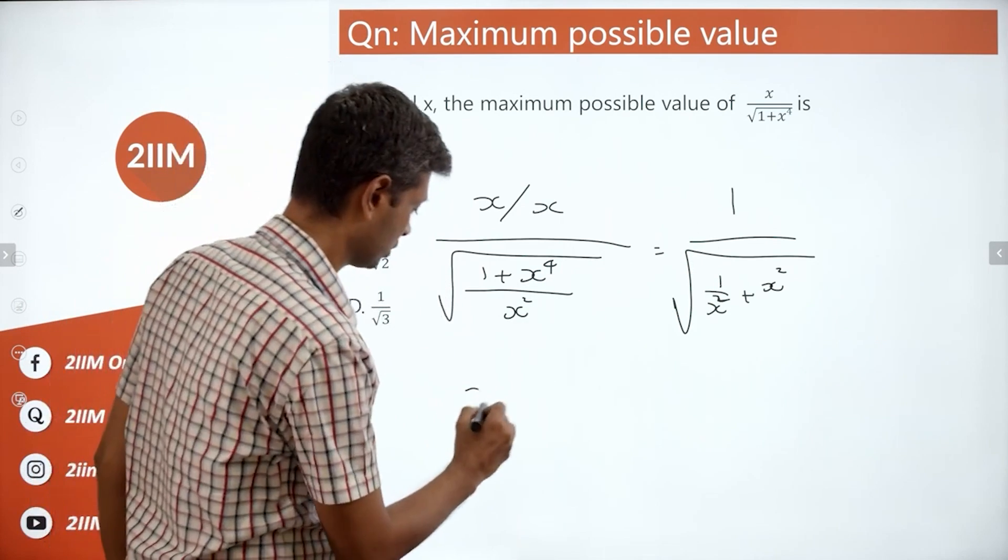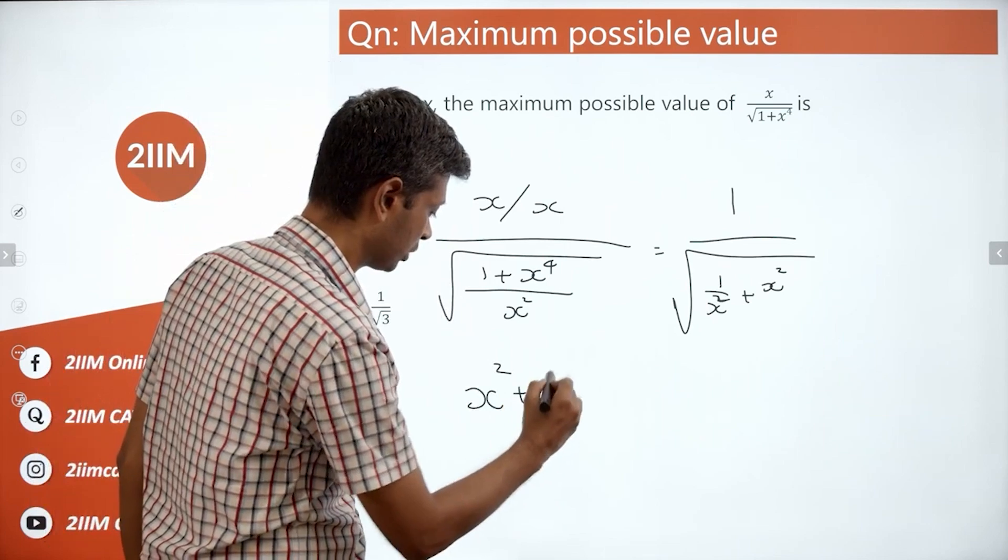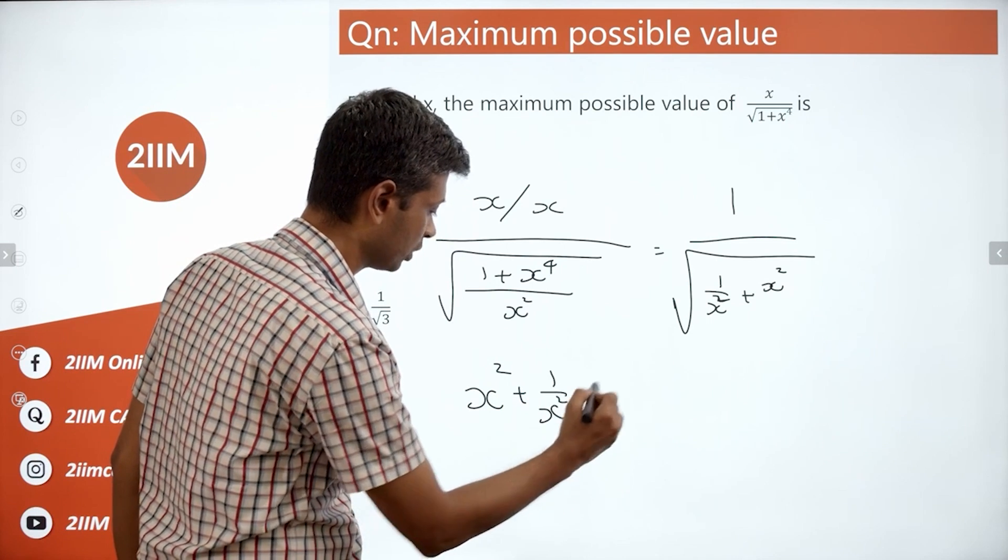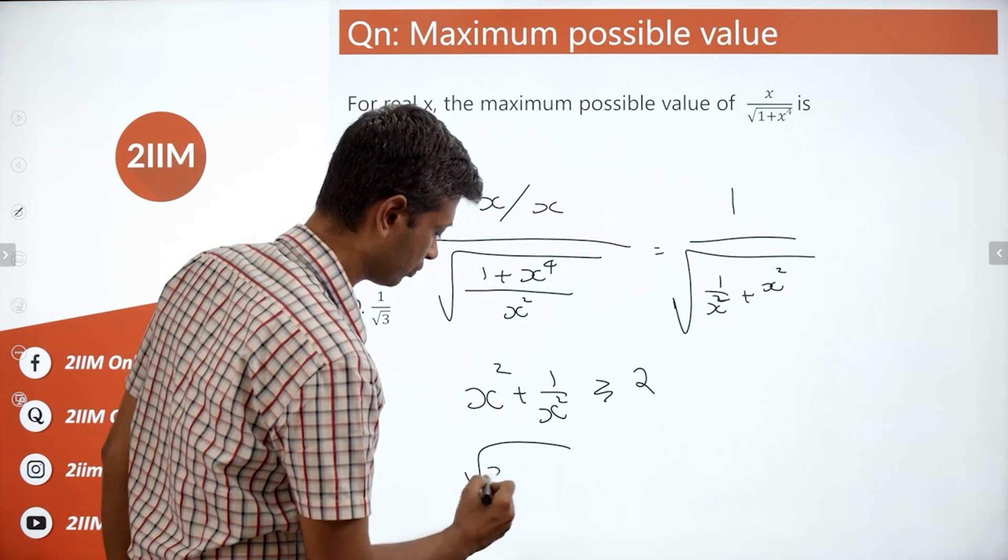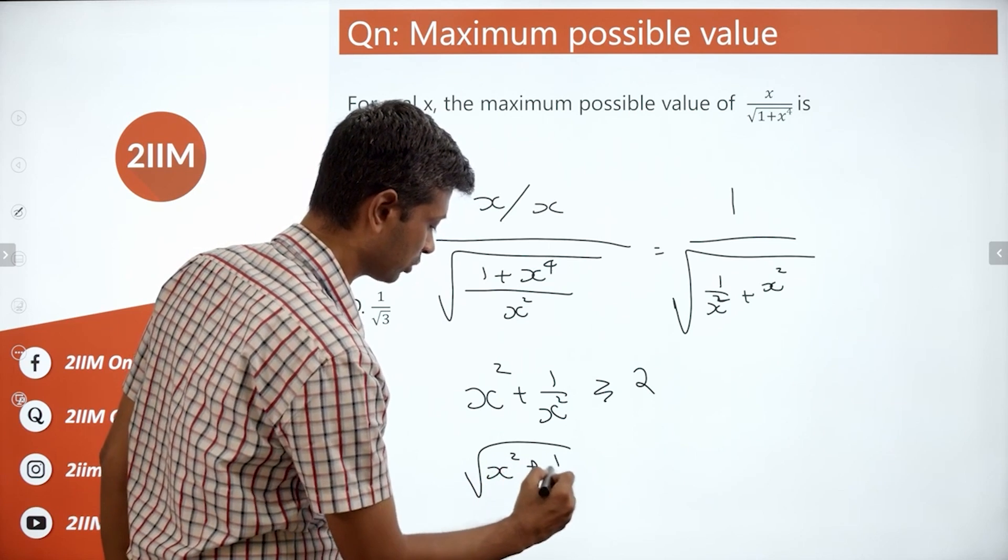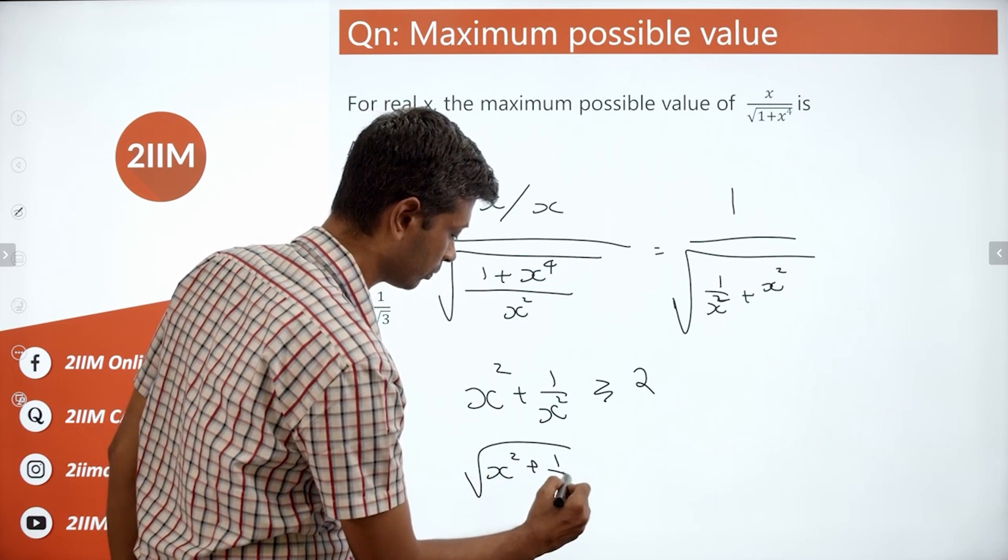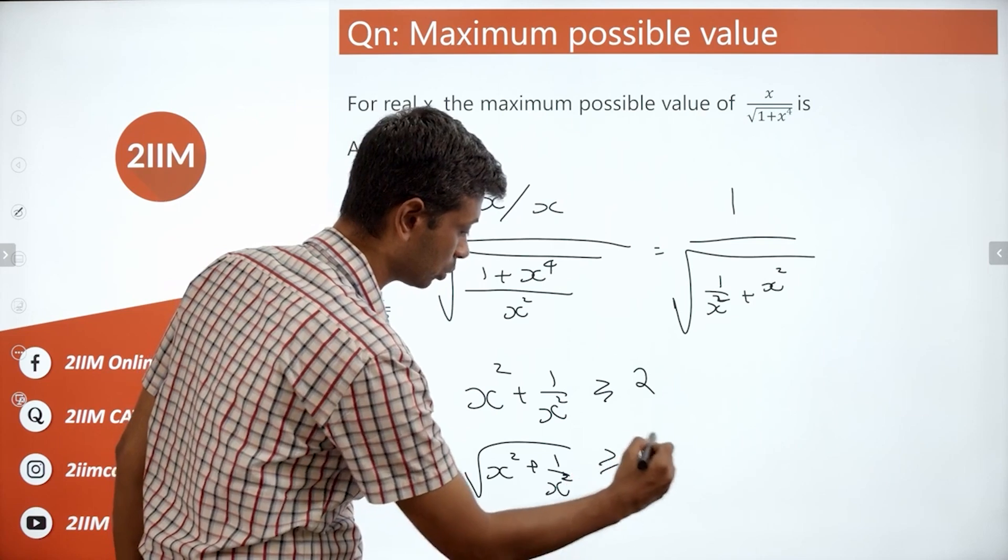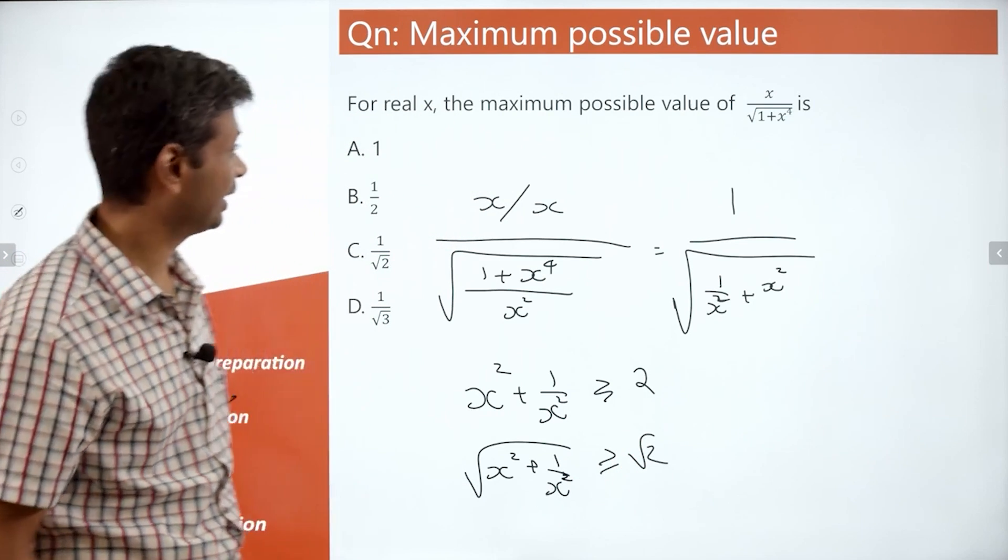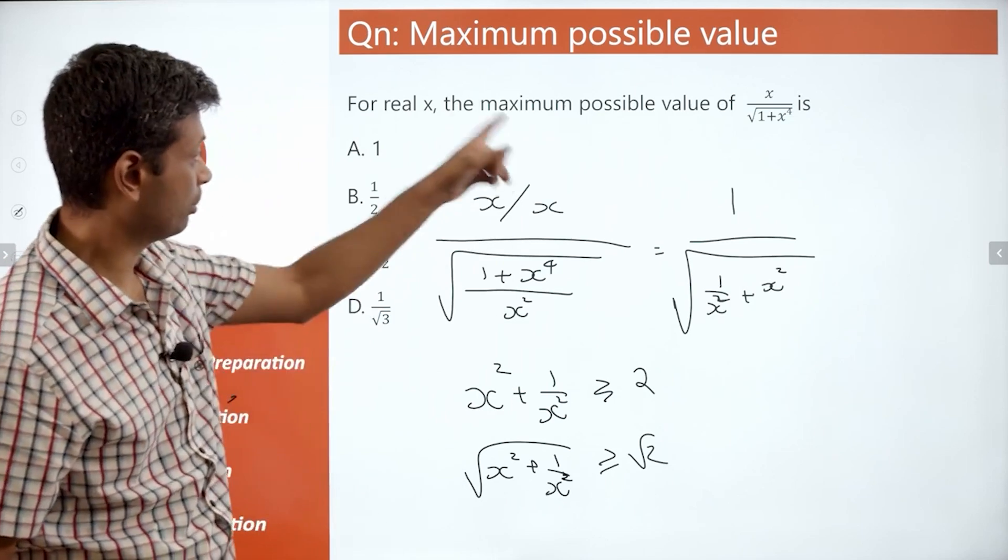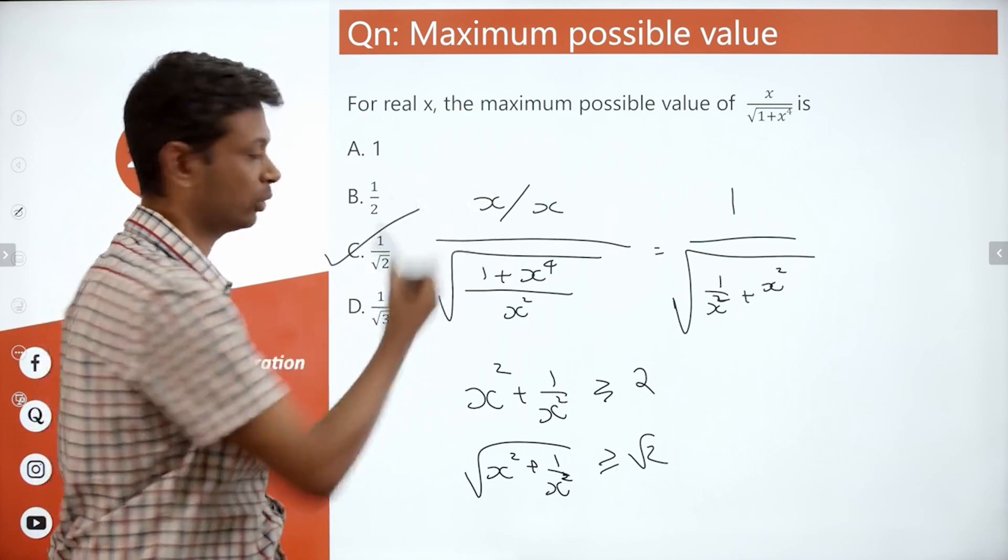So, I am going to start with this. x square plus 1 by x square is greater than or equal to 2 or square root of x square plus 1 by x square is greater than or equal to root 2. 1 by square root of x square plus 1 by x square is less than or equal to 1 by root 2 or the maximum possible value 1 by root 2.